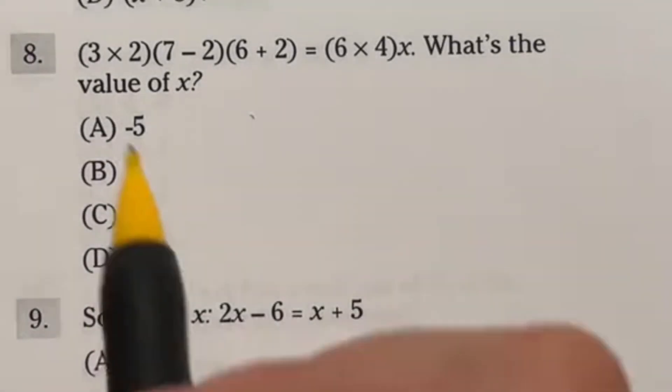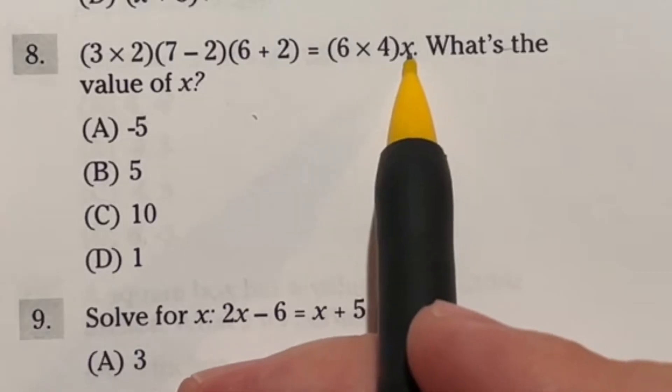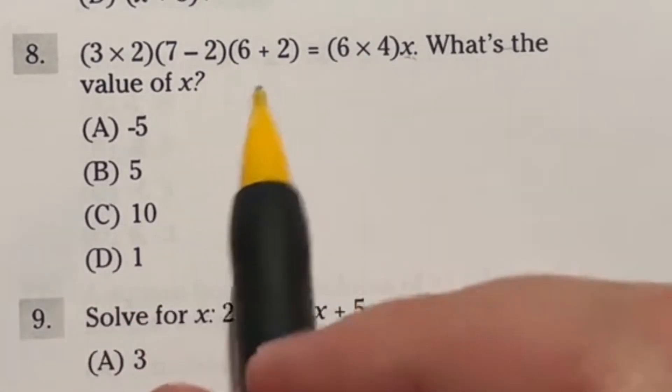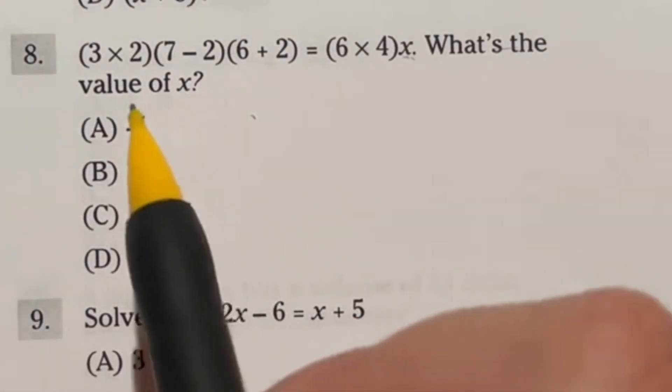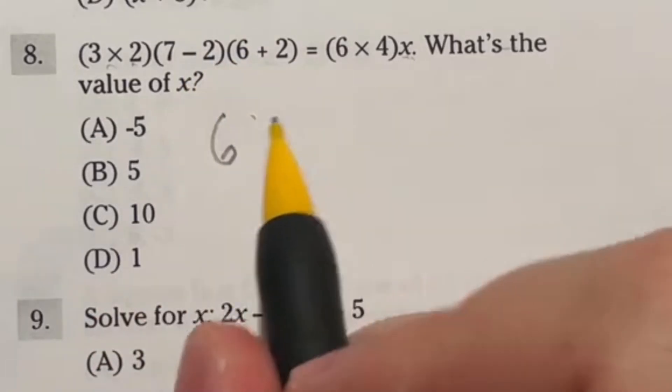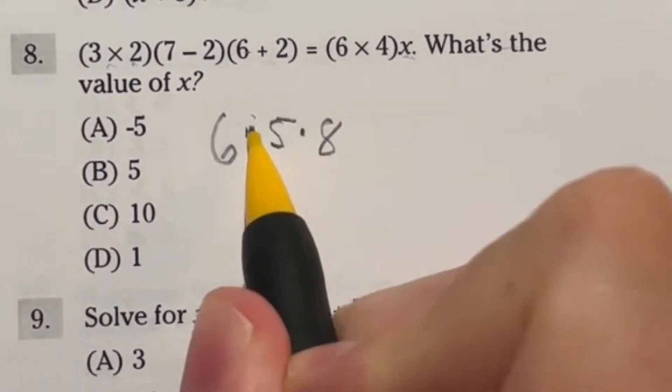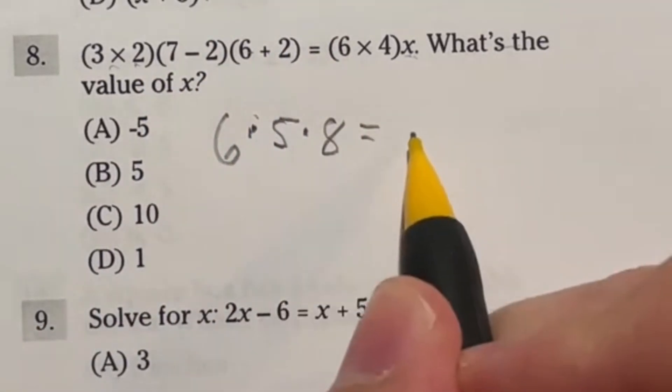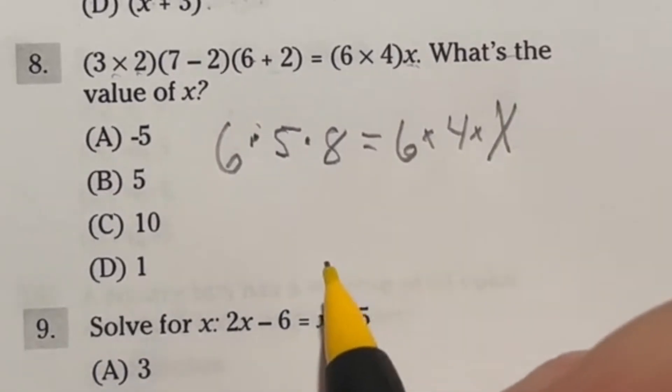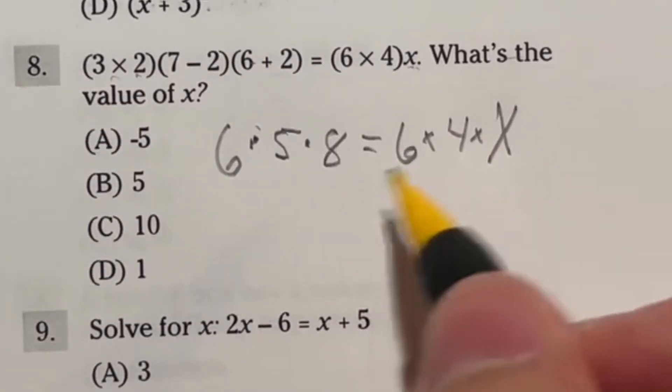Number 8 on the ASVAB mathematics knowledge is this long mess of a question here. It says what's the value of x, so we're just solving to get x by itself. It looks like it's just a dumpster fire of numbers, but let's work through. Remember you don't have a calculator here, so you do have to take each step individually. 3 times 2 is 6, then 7 minus 2 is 5, and 6 plus 2 is 8. So we have these three numbers being multiplied together, while on the other side we have 6 times 4 times x. Now I could multiply all this out, but I'm not going to because I think it's faster to start canceling things that are on both sides.